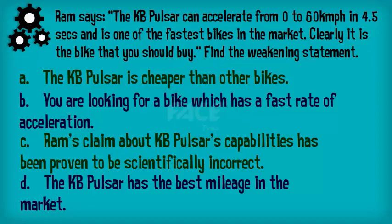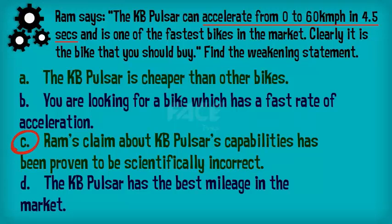The logic in Ram's argument flows as follows: KB Pulsar's rate of acceleration is one of the highest in the market, hence you must buy it. To weaken Ram's argument, you have to come up with a statement which proves that KB Pulsar is clearly not the bike you should buy. This can be done by casting doubt on the claim about KB's rate of acceleration. According to option C, Ram's claim which provides data about KB is scientifically incorrect. In this case, it is evident that KB Pulsar is not the bike you have to buy. Thus, option C is the weakening statement.